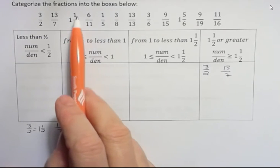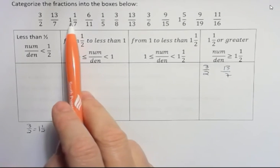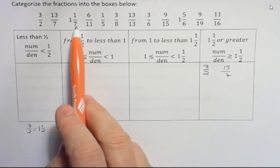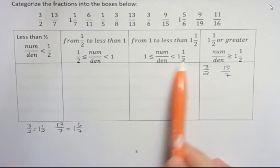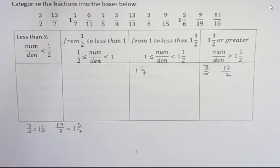1 and 1 seventh. Well, 1 and 1 seventh, 1 seventh is pretty small. It's not much more than just having no extra sevenths there. It is more than 1 because if I just had 1, I wouldn't have any fraction there. So it's more than 1, but it's less than 1 and a half. So 1 and 1 seventh would go into this box.